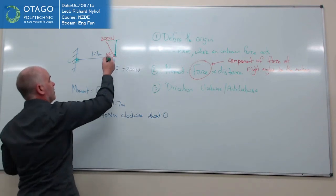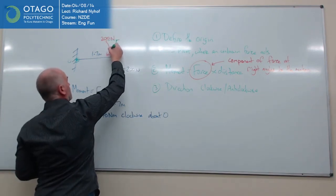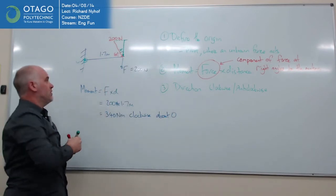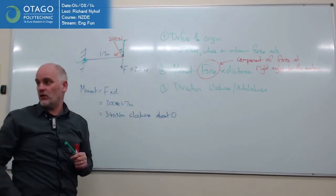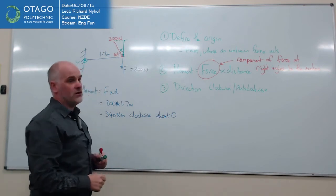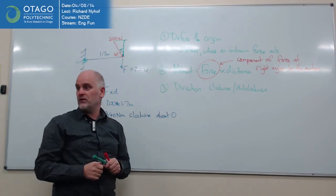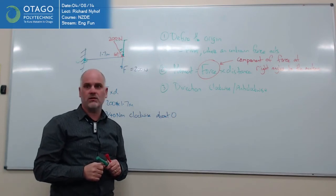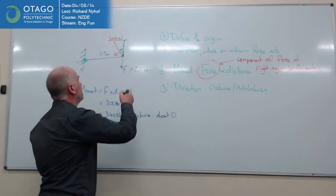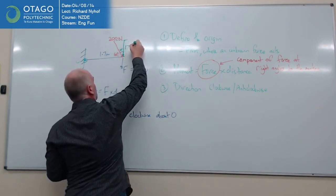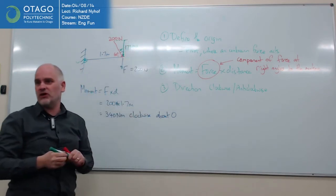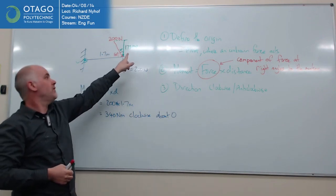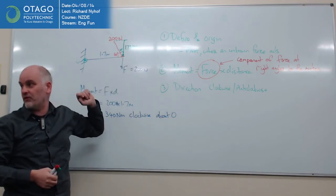So we need a little bit of trigonometry. If that's 60, this one must be 30. 200 is the hypotenuse. We're trying to find the adjacent, so it's going to be the cosine. So 200 cosine 30. Someone's going to work out for me, 173.2 or something. Is that right? 173.2? Yep.